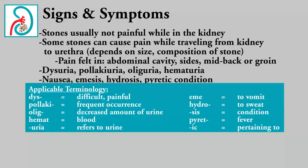This depends on the size and composition of the stone. Pain can be felt all over the abdominal cavity, sides, mid-back, or groin. It can cause such things as dysuria, which is difficulty when urinating; polyuria, which is frequent urination; oliguria, which is a decreased amount of urine; or hematuria, which is blood in the urine.